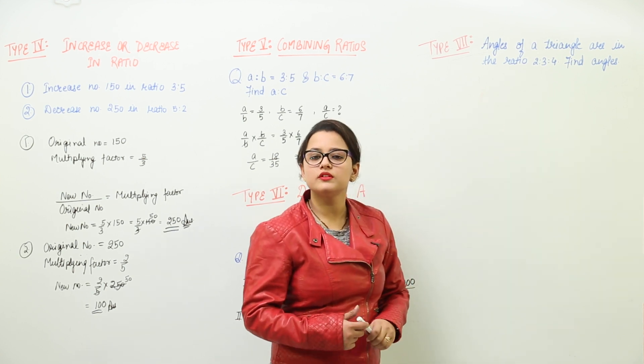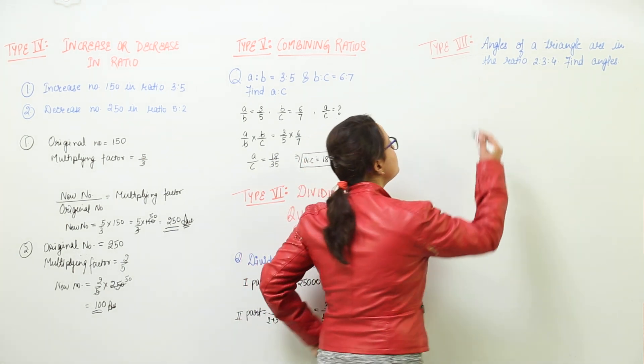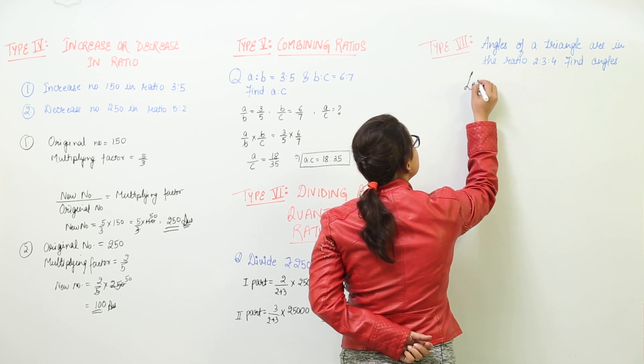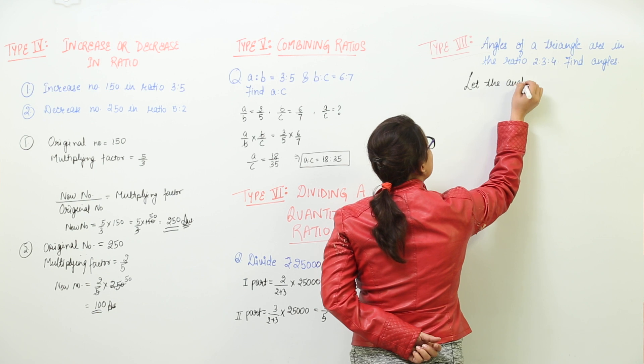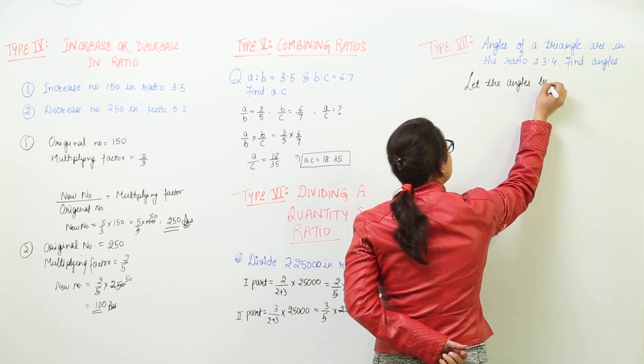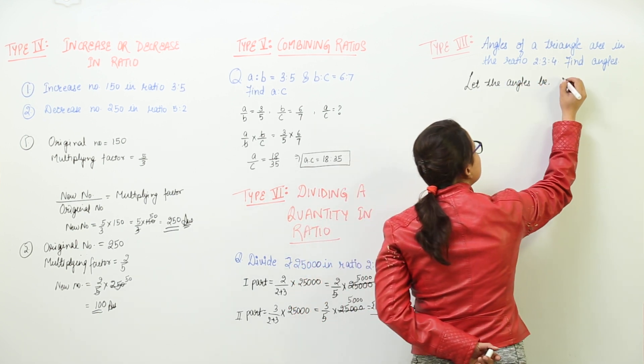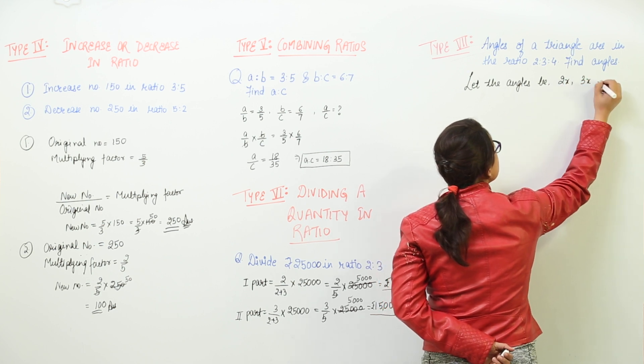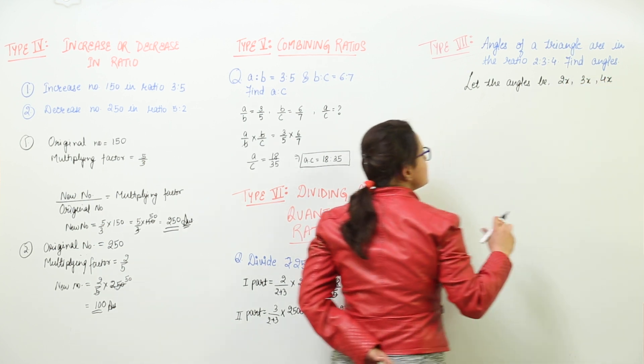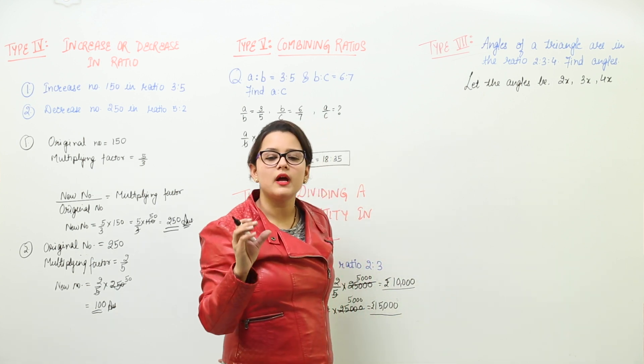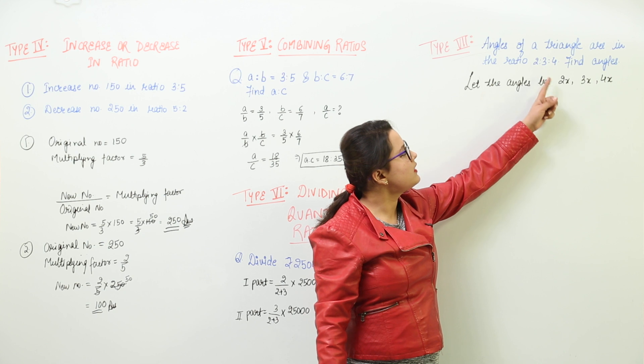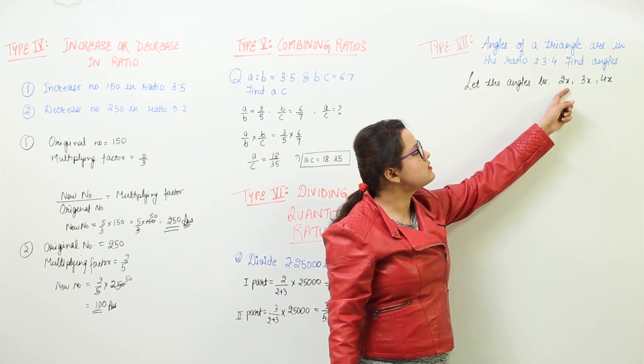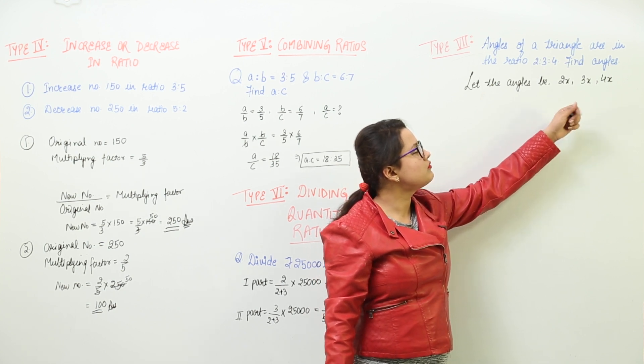We have to find all the 3 angles. So before moving forward we should assume let the angles be, because they are in the ratio, they can be written as 2x, 3x and 4x. There must be some angle to the ratio of which we have written the ratio. So this is the first angle's ratio, 2x, 3x and 4x.